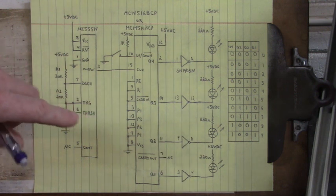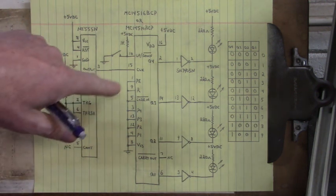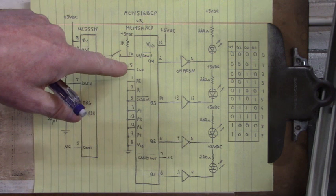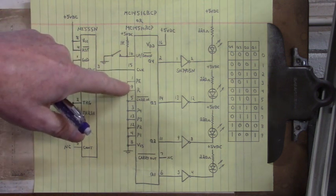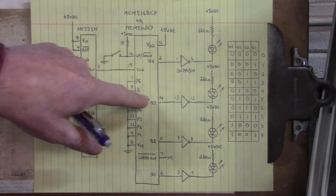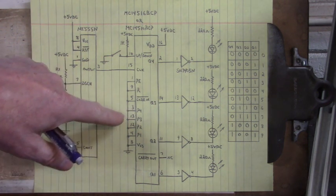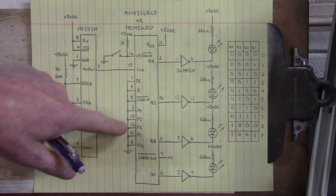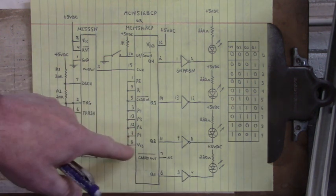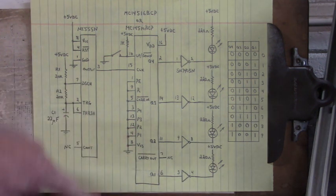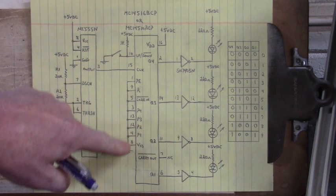Now the pins that I'm not using are preset enable, reset, carry in bar, preset 4, preset 3, preset 2, preset 1, and pin 8 is ground. So I tie those unused pins to ground.